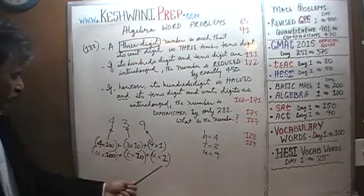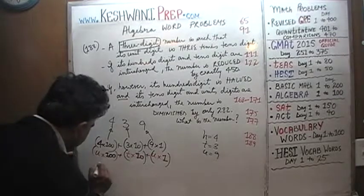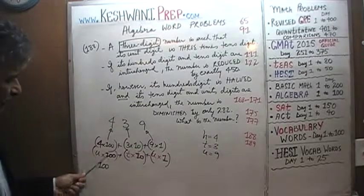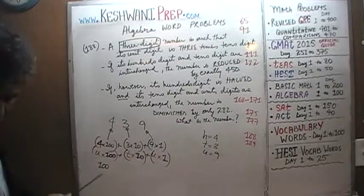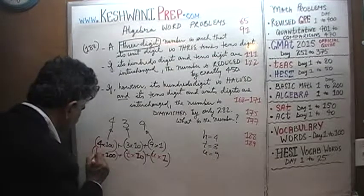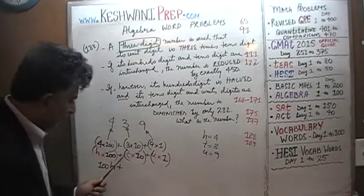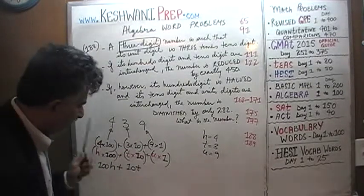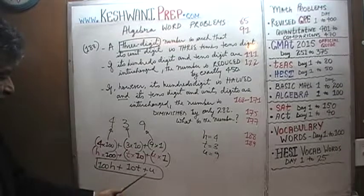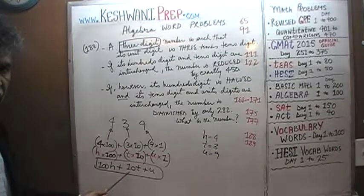All we have to do now is simplify this into a more elegant form. h times 100 is simply 100h, t times 10 is simply 10t, and u times 1 is just u. So a three-digit number is expressed as 100h + 10t + u. Unless we understand this concept, we cannot do anything with this problem. This is the foundation and the starting point.